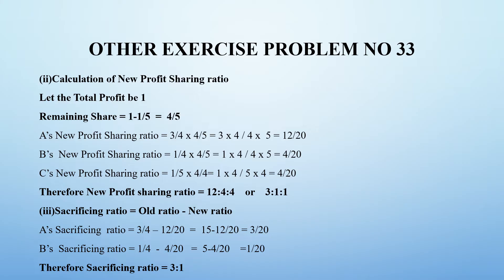So the new profit sharing ratio is 12:4:4. Dividing by the common factor 4, we get 3:1:1 as the new profit sharing ratio. The sacrificing ratio is old ratio minus new ratio. A's sacrificing ratio: 3/4 minus 12/20. Making the common factor 20: 15/20 minus 12/20 equals 3/20.